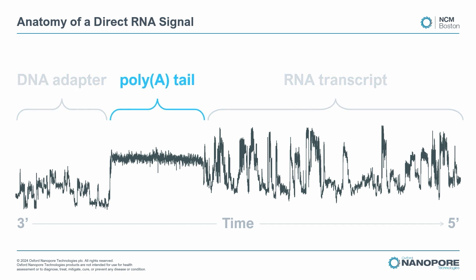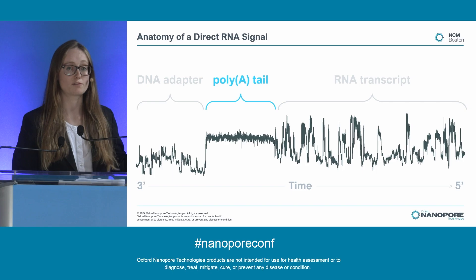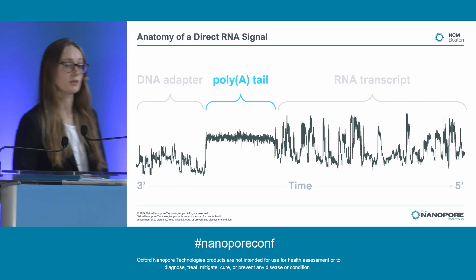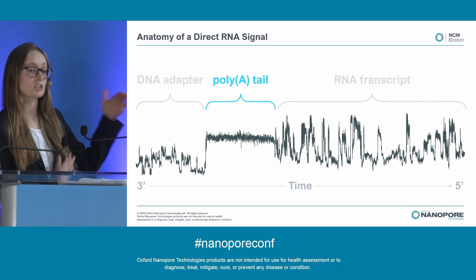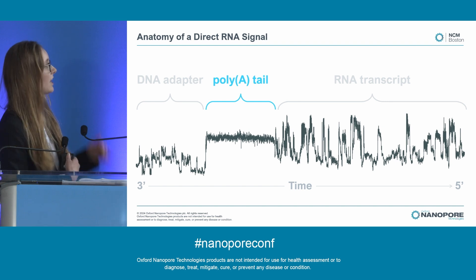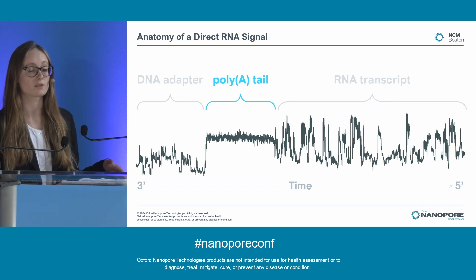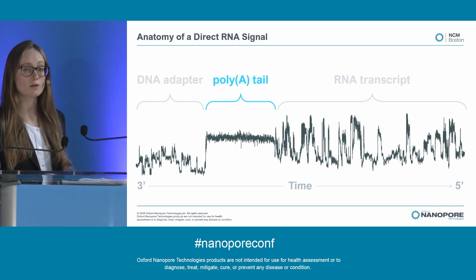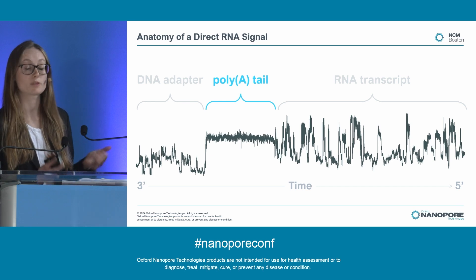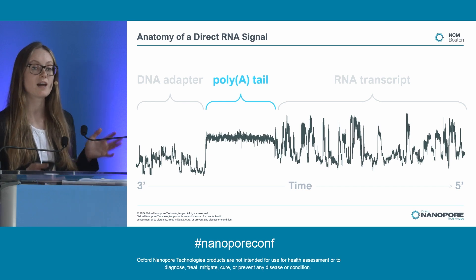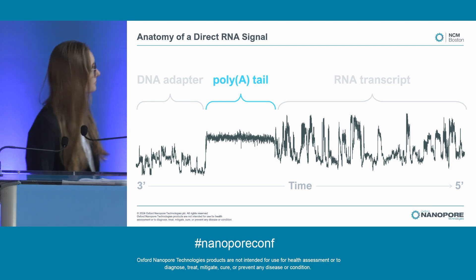I want to focus on the poly-A tail here just a bit. By eye, it's really easy to pick out, and it's also very straightforward for us to pick out computationally. You can see that it has a much narrower range of amplitudes and it's a very consistent level all the way across. We can take out this information and combine it with the speed of the read to determine how long the poly-A tails are.